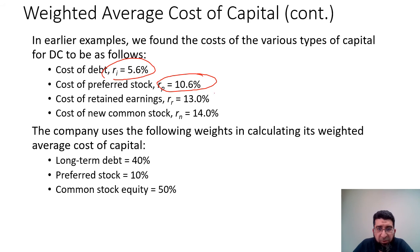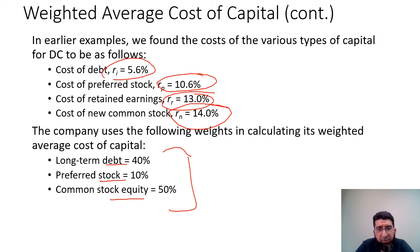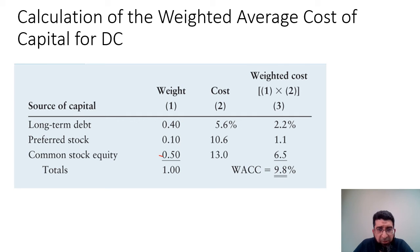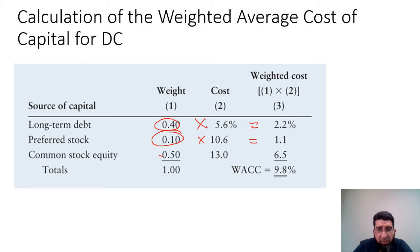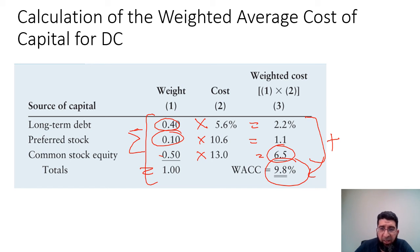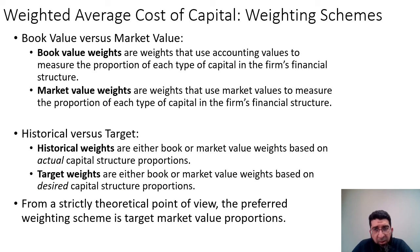For the DC example, the costs are: debt 5.6%, preferred stock 10.6%, retained earnings 13%, and new common stock 14%. The capital structure weights are: debt 40%, preferred stock 10%, and common stock 50%. Long-term debt weighted cost is 2.2%, preferred stock weighted cost is 1.1%, and common stock weighted cost is 6.5%. The total WACC, summing all weighted costs, is 9.8%.